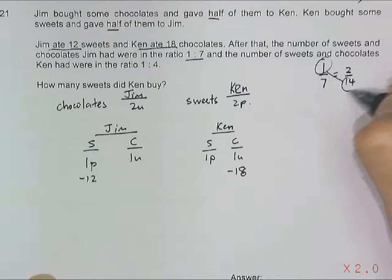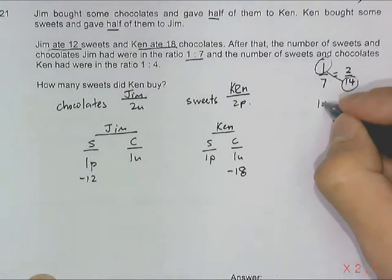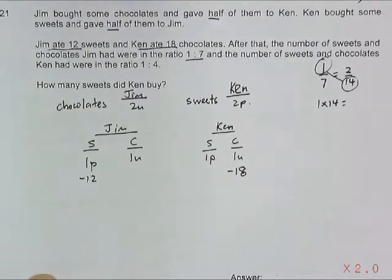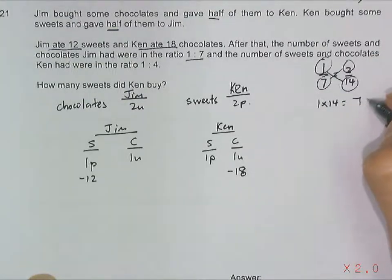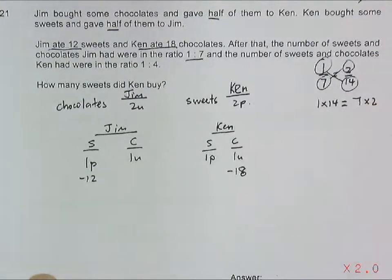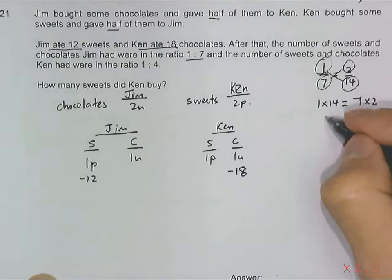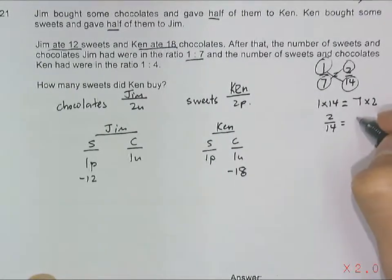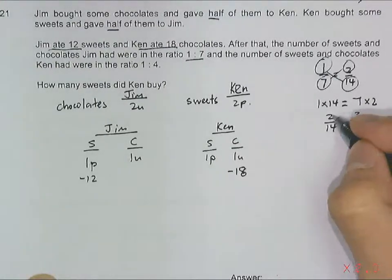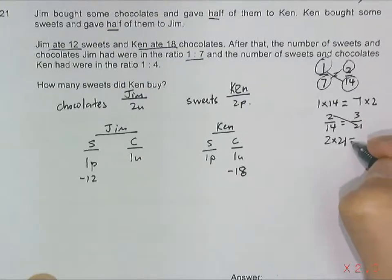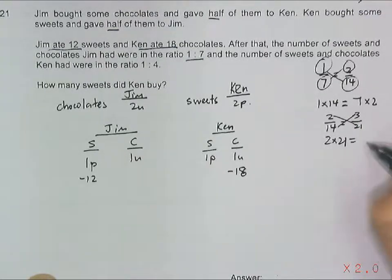So what you see is like this: 1 times 14 will be the same as 7 times 2. You can go on with different fractions as long as they are equivalent. For example, 3 over 21 - crossing over means that 2 times 21 is actually equal to 14 times 3 as well. We end up like this.